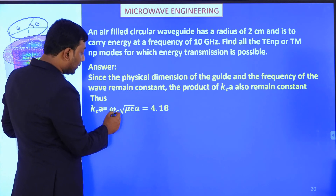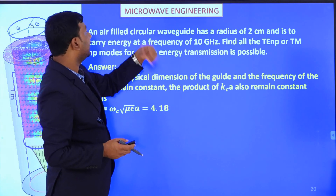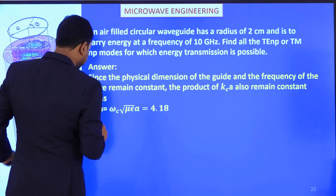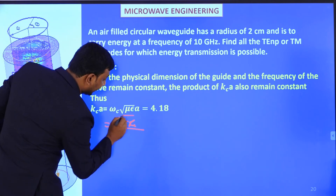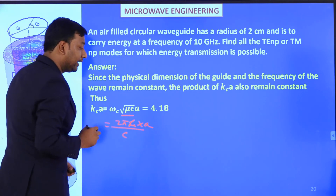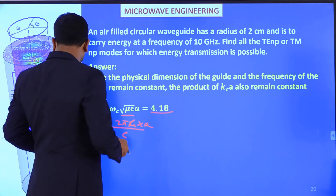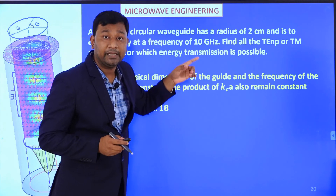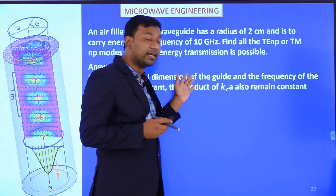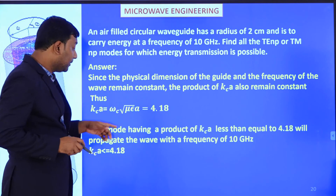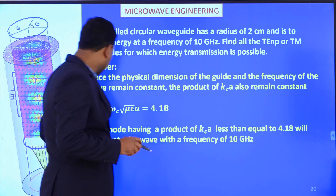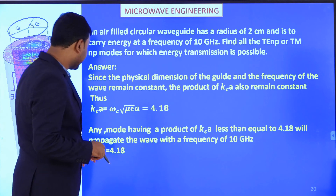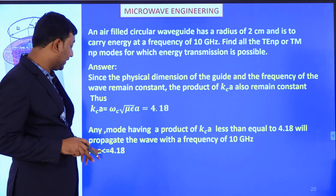From the relation kc·a equals (2·pi·fc/c)·A and using omega-c equal to 2·pi·fc with A equal to 2 cm for the air-filled guide, we find kc·a equals 4.1, which is the maximum value for this waveguide configuration. Any mode having a product kc·a less than or equal to 4.1 will propagate at 10 GHz. Since kc·a equals X'np for TE modes and Xnp for TM modes, we look for all roots less than 4.1.